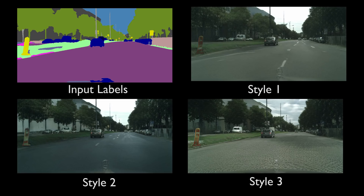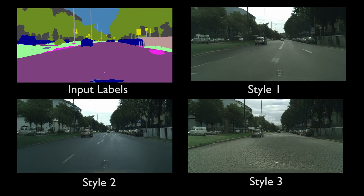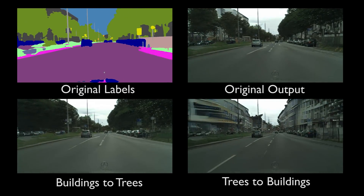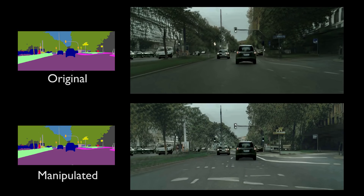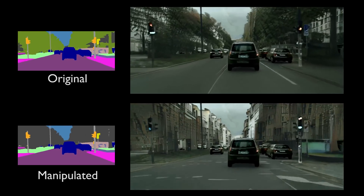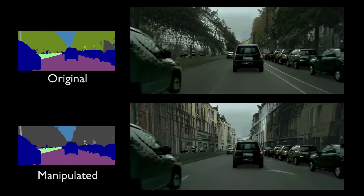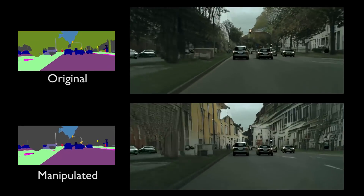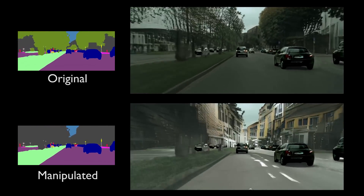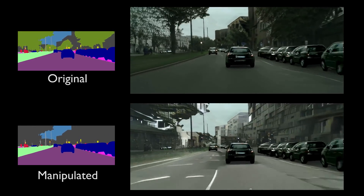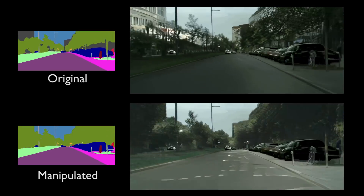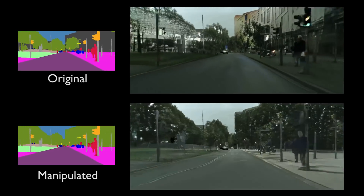Our network can synthesize multiple different results given the same input, or we can manipulate the input to generate a desired output video. In a side-by-side comparison between the input and synthesized video, we can change all the trees into buildings, or edit the styles of the buildings and roads. We can generate multiple styles and apply them to objects in the video, then change all buildings back to trees and change their styles again.